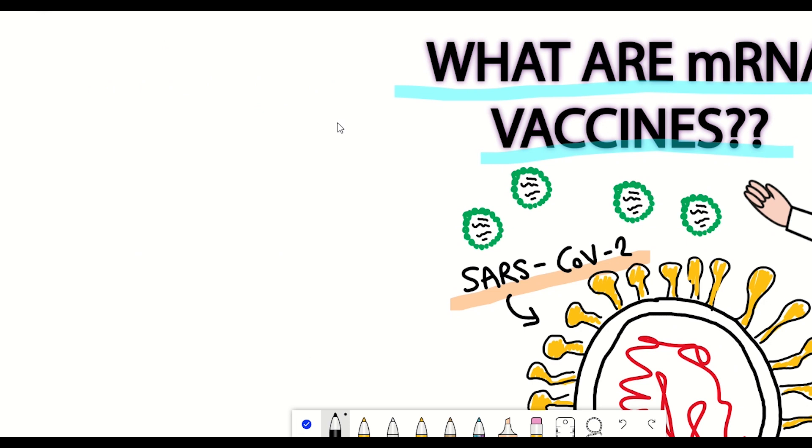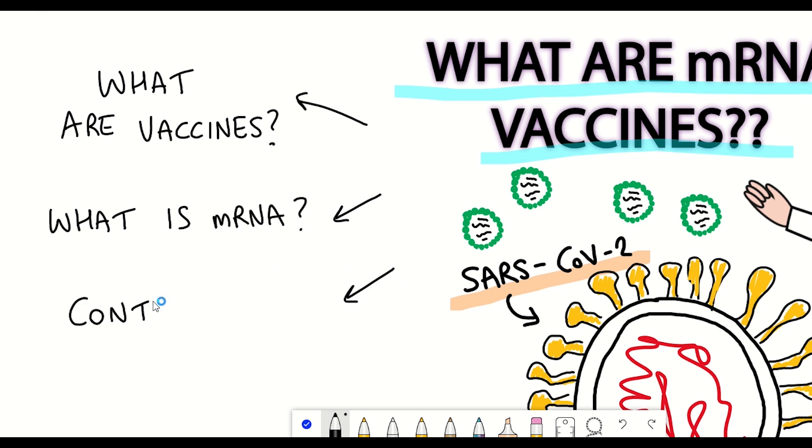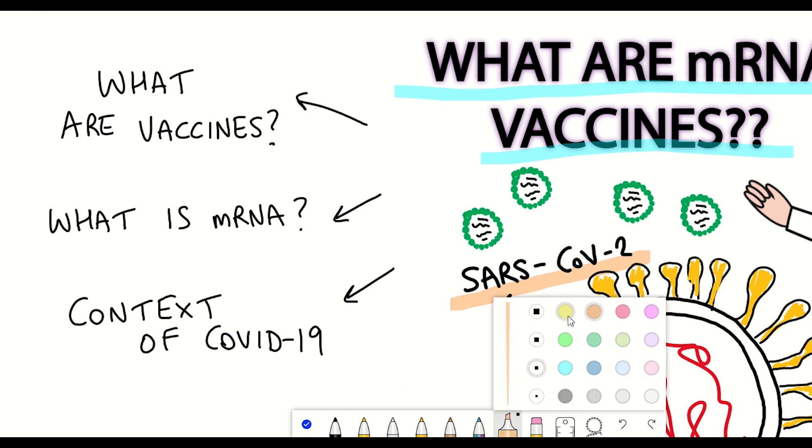So firstly we'll talk about what actually are vaccines and what makes an effective vaccine, and then we'll look at what actually is mRNA. And then lastly we'll put this into some context and look at the current mRNA vaccines that are being developed to try and tackle COVID-19. So firstly then, what is a vaccine?